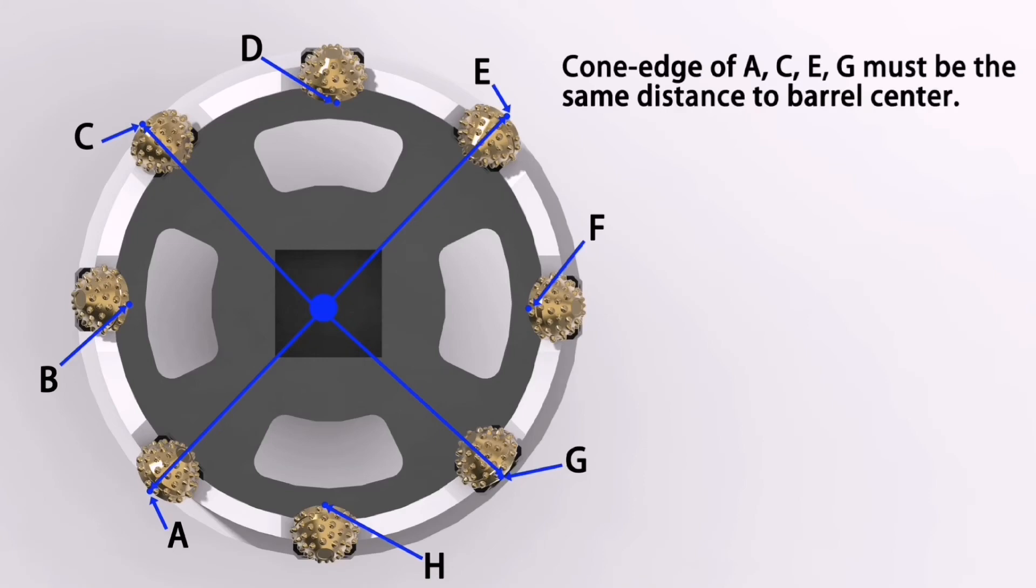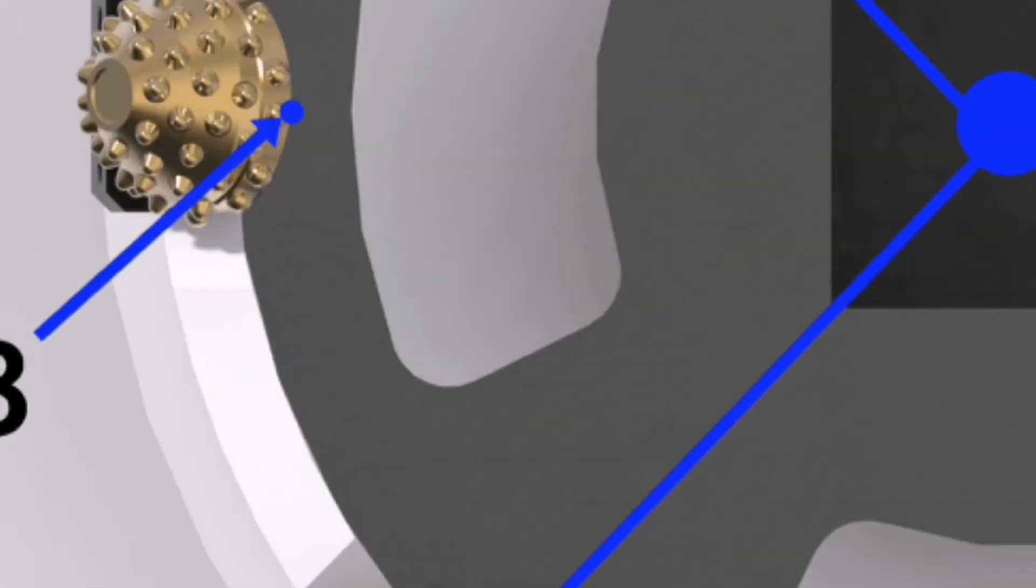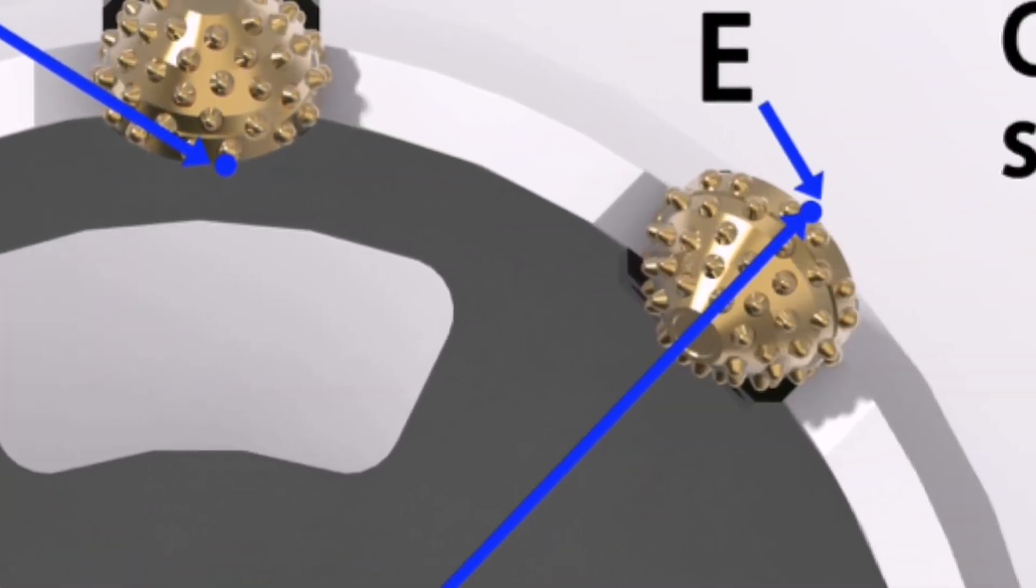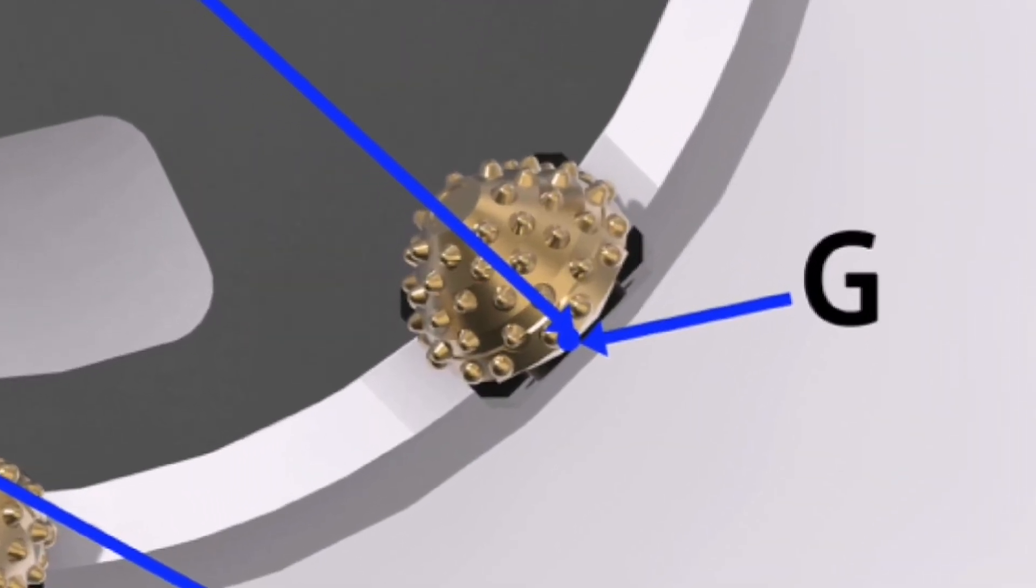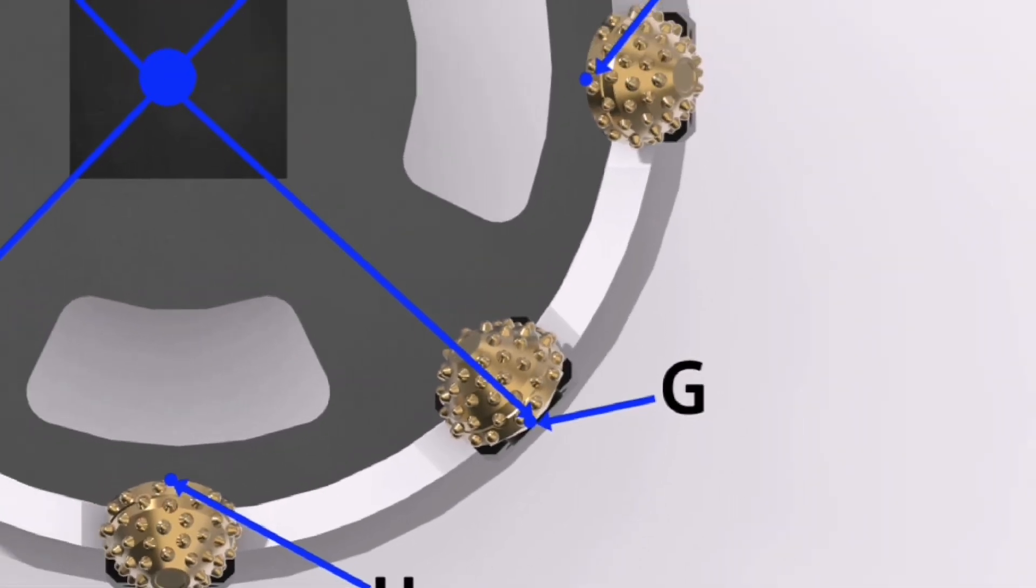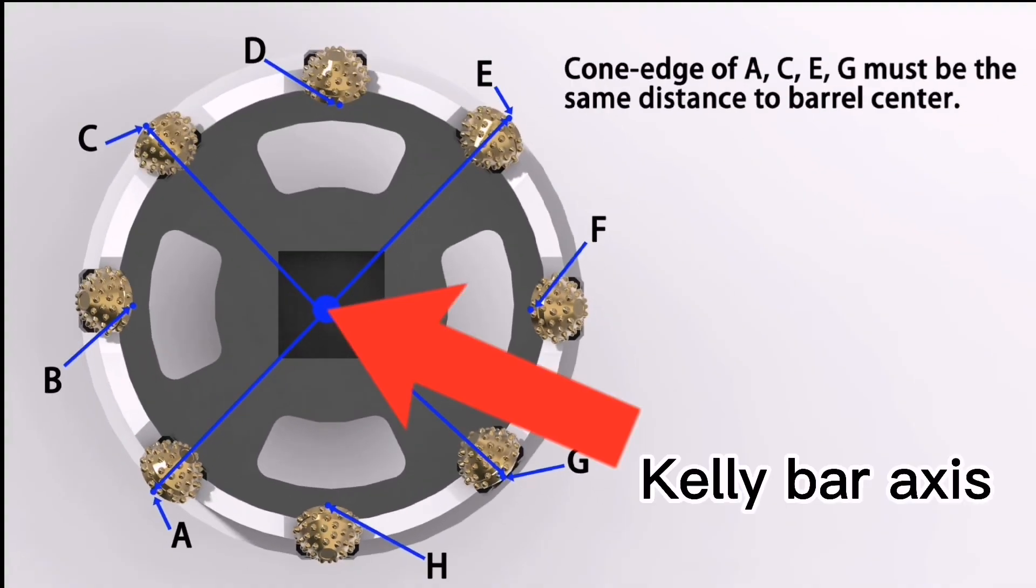Assembling angle of all the other roller cone beads, A, C, E, G, must be the same distance to barrel center. Barrel center is also the same position of Kelly bar axis.